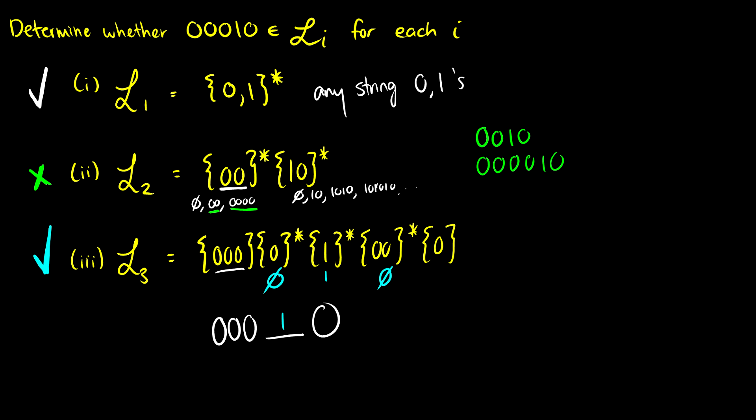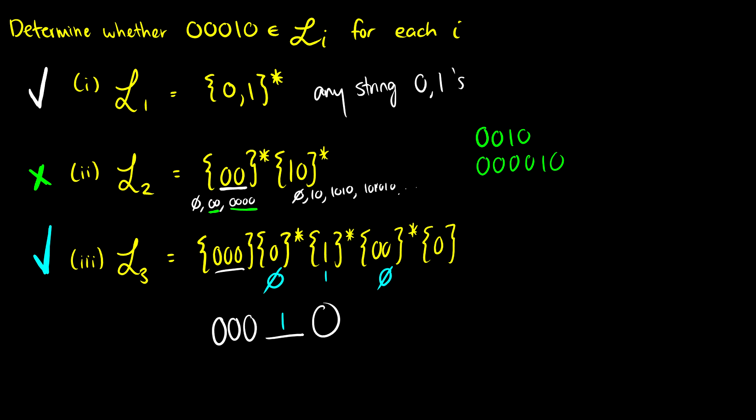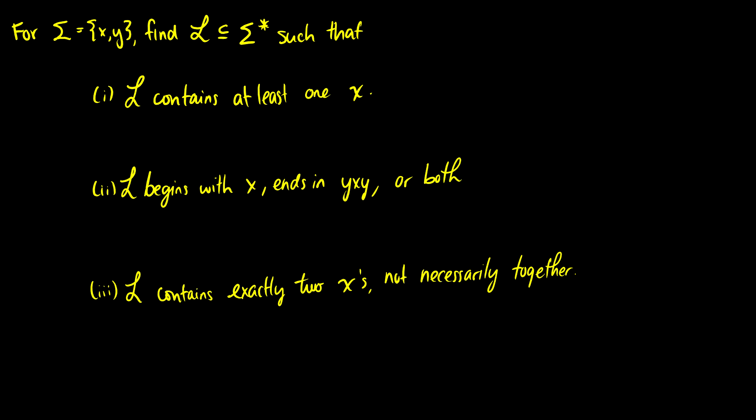Okay, so that's the first question. For the second question, sigma is {x, y}, and we want to find the language in sigma star that accepts certain strings. Before we checked if a string was in a language; now we want to find a language that only accepts certain strings. For the first one, we want to find a language that contains at least one x — that's the only requirement.